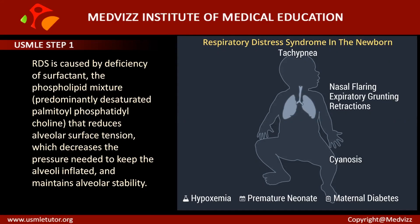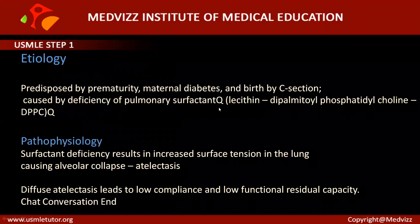In the newborn, respiratory distress syndrome is not because of infection or sepsis; it is mainly because of deficiency of surfactant. The surfactant is made up of dipalmitoyl phosphatidylcholine, which reduces surface tension. This surfactant decreases the pressure needed to keep the alveoli inflated and is mainly responsible for maintenance of alveolar stability and to prevent alveolar collapse and atelectasis.